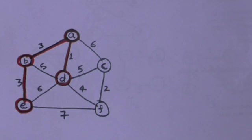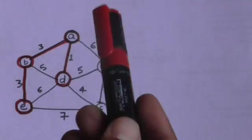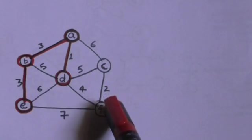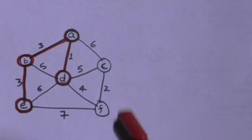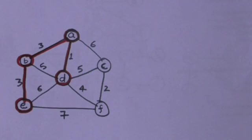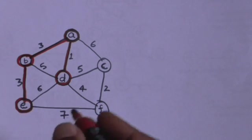Now the minimum spanning tree has four vertices: A, B, D, and E. The edges which join the vertices of the minimum spanning tree to the vertices not included are AC, DC, DF, and EF. The edge with minimum weight among these edges is DF, so we will include edge DF in the minimum spanning tree.